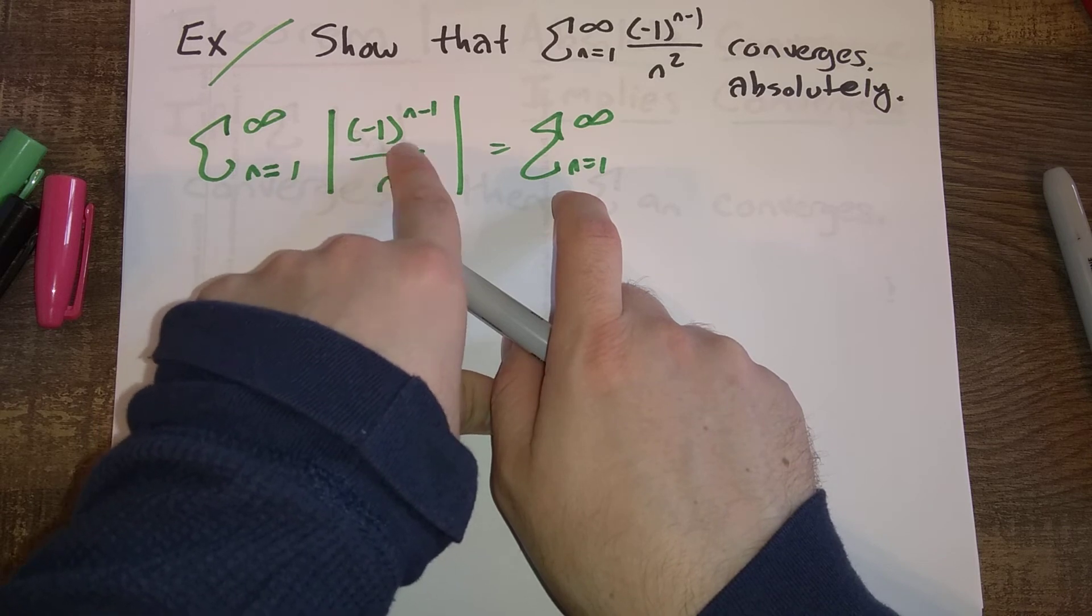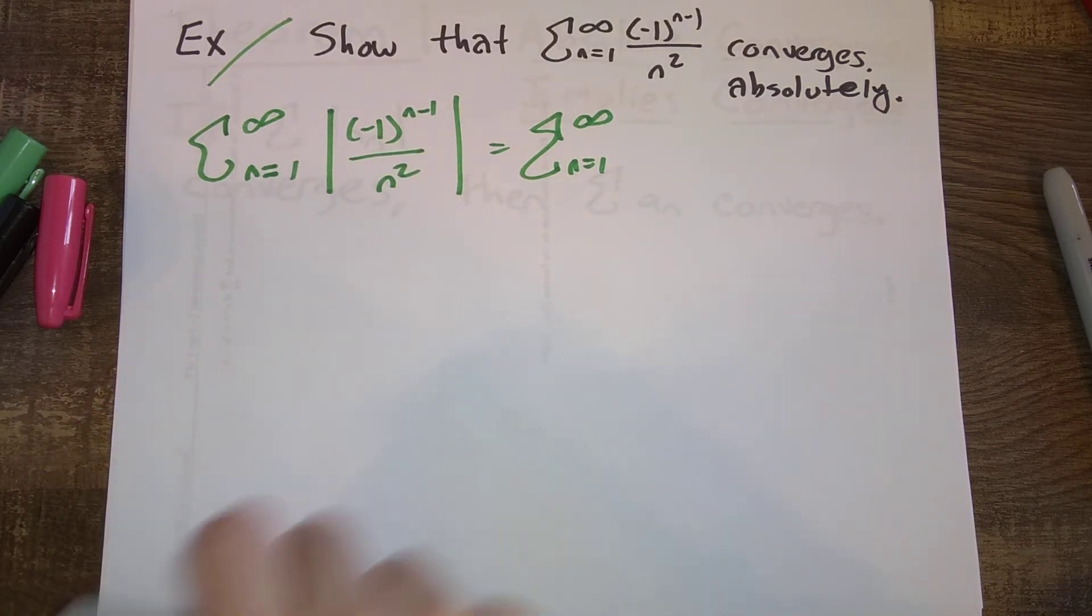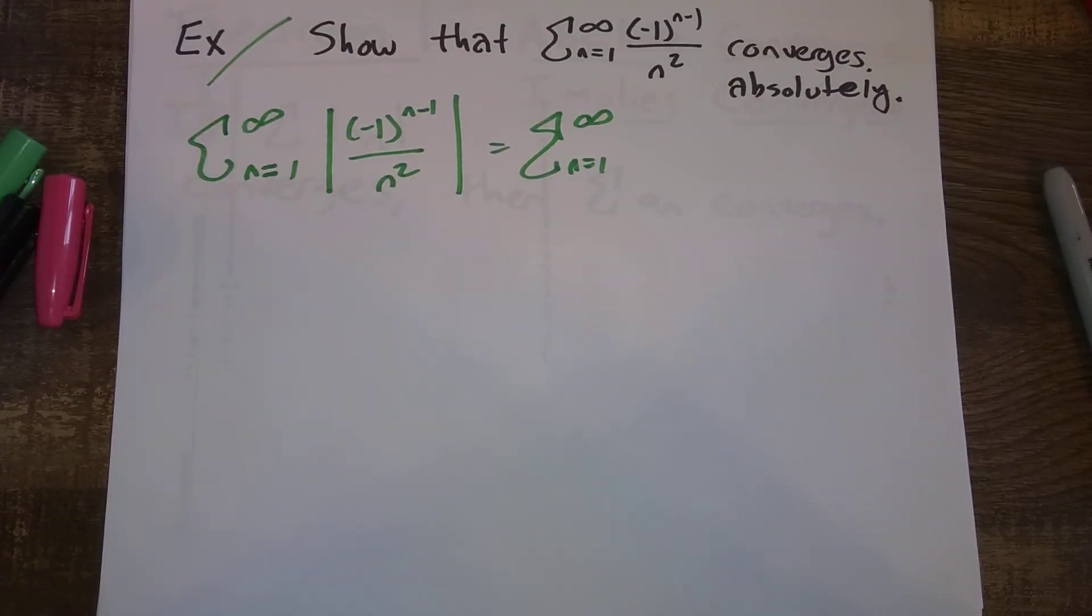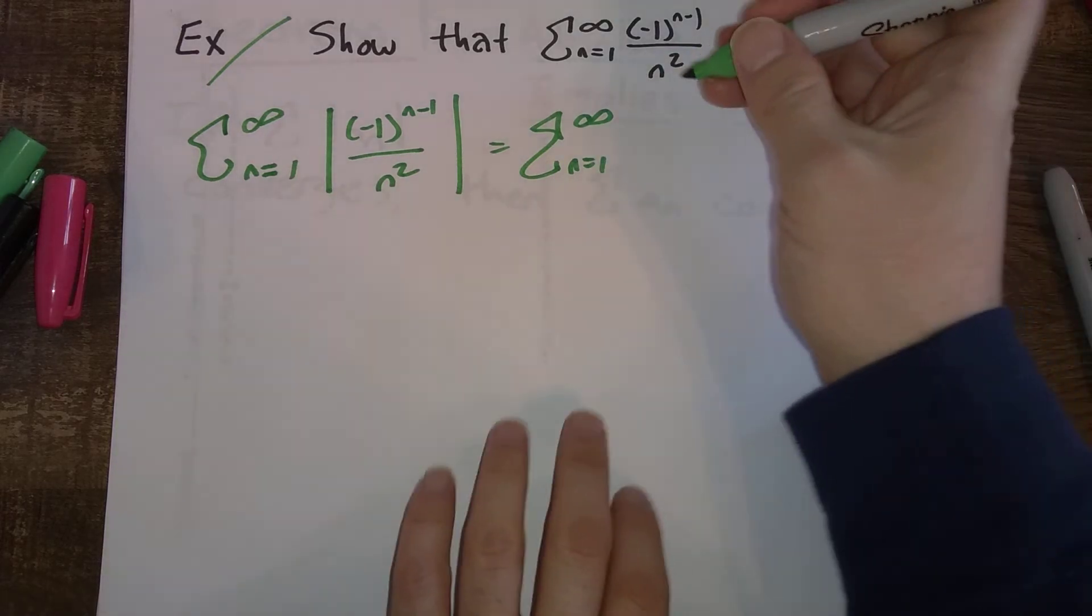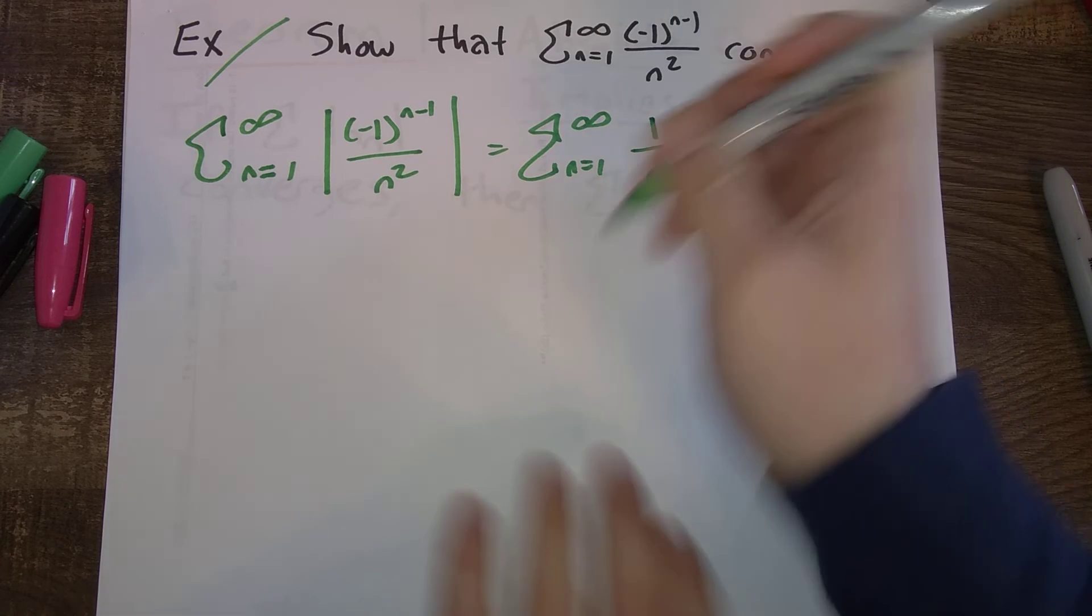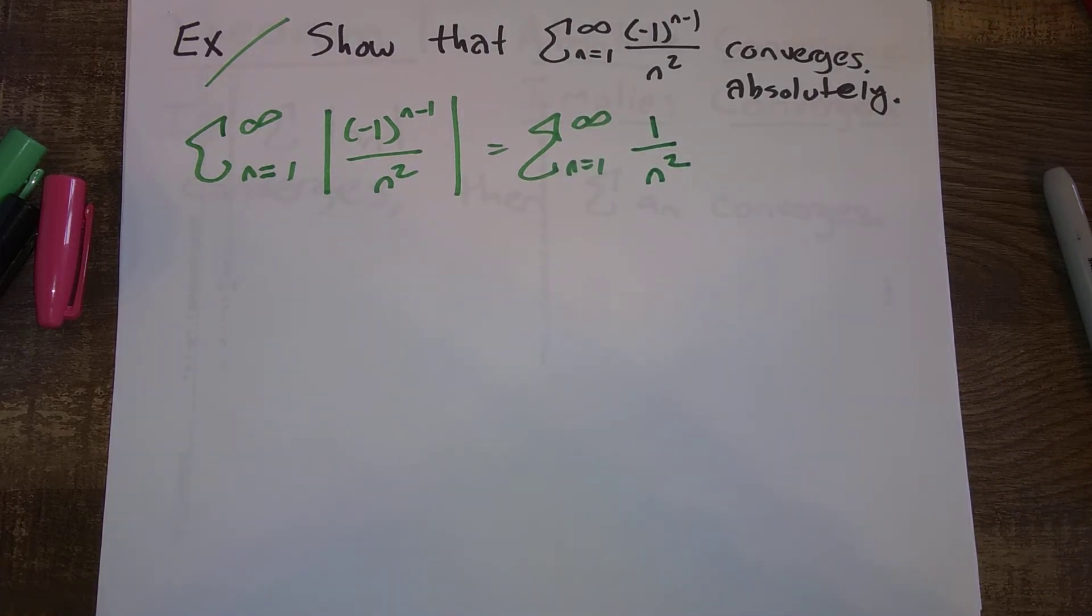And so what happens when we take absolute value of this? The absolute value of (-1)^(n-1), those terms are always going to be either plus or minus one, depending on whether n minus one is odd or even. And so the absolute value of either plus one or minus one is just going to be one. So our series here is going to be the sum from n equals one to infinity of one over n squared.